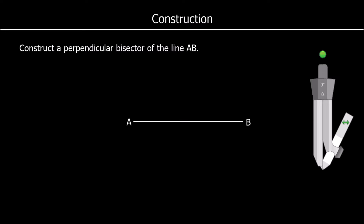This question says construct a perpendicular bisector of the line AB. Perpendicular means it's going to cross at 90 degrees, making a right angle with the line AB as it goes through it. Bisector means split in half, so it's going to be exactly in the middle of A and B. We want a perpendicular line exactly in the middle of A and B.